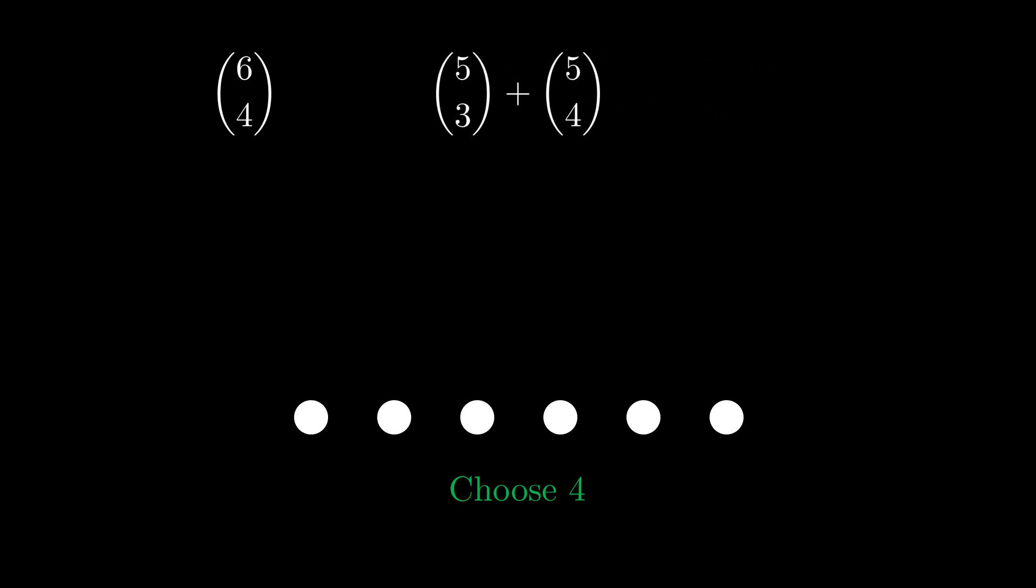What about this one? 5 choose 3 plus 5 choose 4. It's a bit weird. Now, I'm going to stay with 6 objects, except I'm going to color one of them pink. And I'm still going to choose 4 of them. But when I choose 4, I'm going to care. I'm going to be concerned about whether I take the pink one or not.